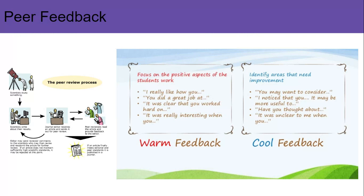The next concept is peer feedback. We've already talked about peer review, and the diagram on the left shows a cartoon version of what a peer review process would be — studying something, collecting the results, writing the paper, sending it to the editor for peer review, other scientists reading it, giving their feedback, and then if it meets peer standards, publishing. So we are looking at peer review, but we're also going to focus on peer feedback and how we can get feedback on models that we create.